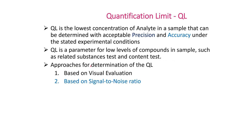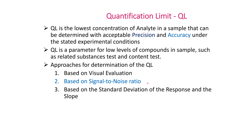Different approaches are available to establish QL. The following approaches are used in the industries: based on visual evaluation, based on signal-to-noise ratio, and based on standard deviation of the response and the slope.